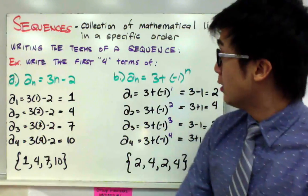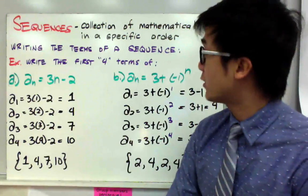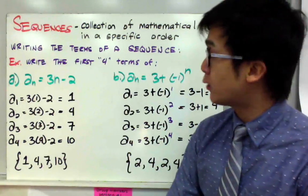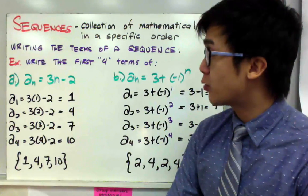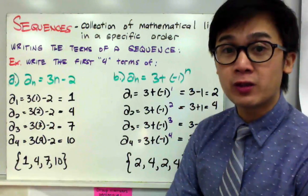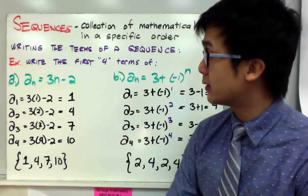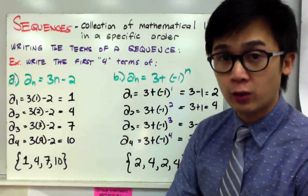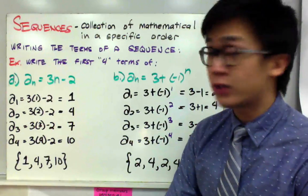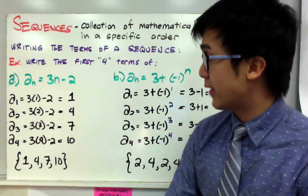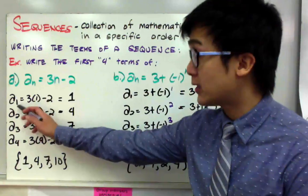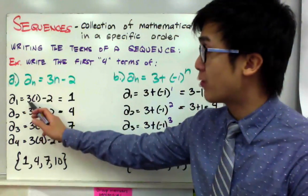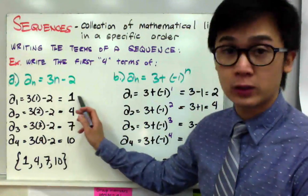In the first example, we're going to be writing the first four terms of a given sequence. For letter A, the sequence is given by a sub n equal to 3n minus 2. To produce the first four terms, all you need to do is plug in the values 1, 2, 3, and 4 for n. So for a sub 1, which is your first term, you replace n by 1.